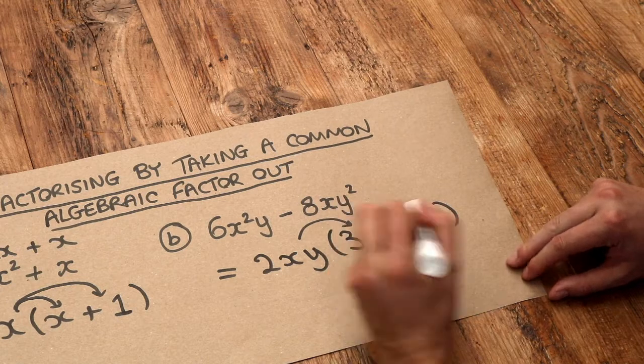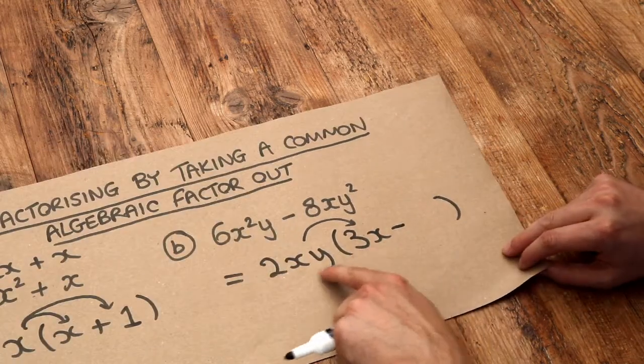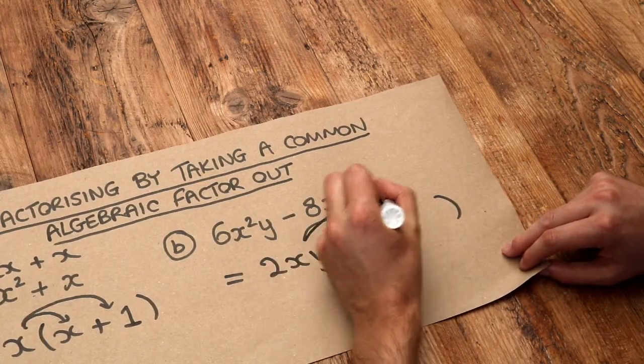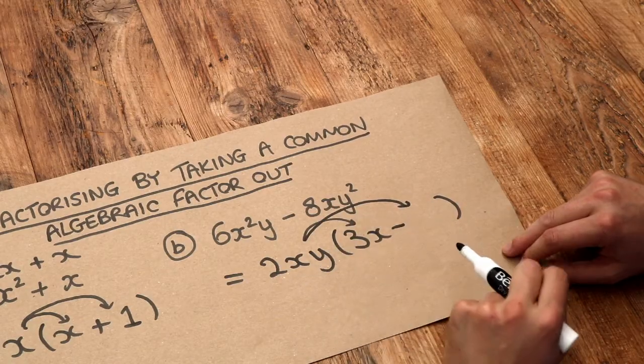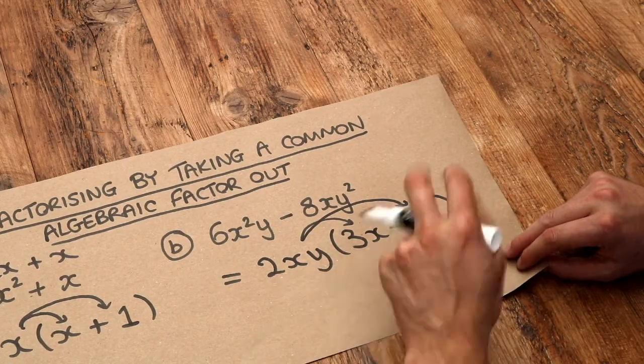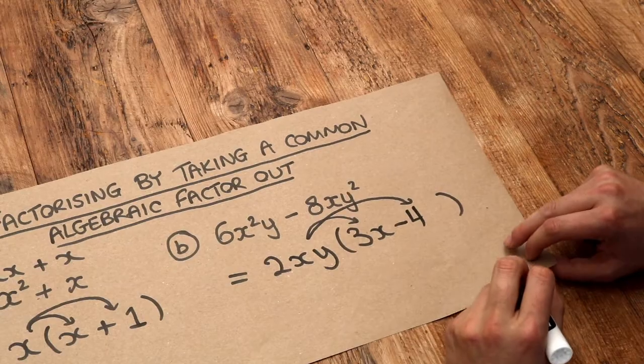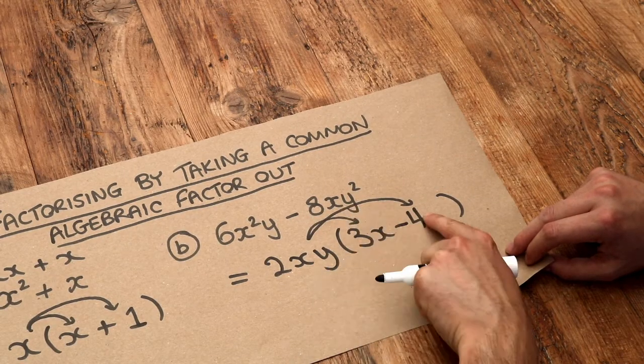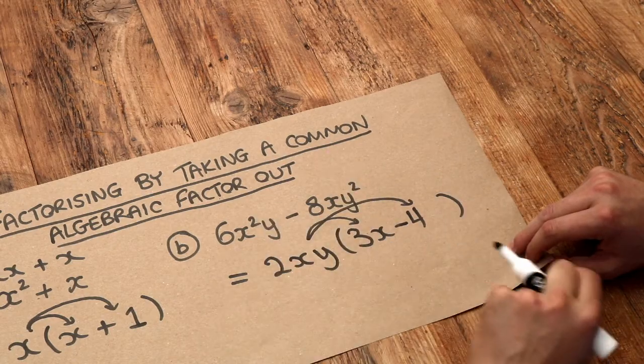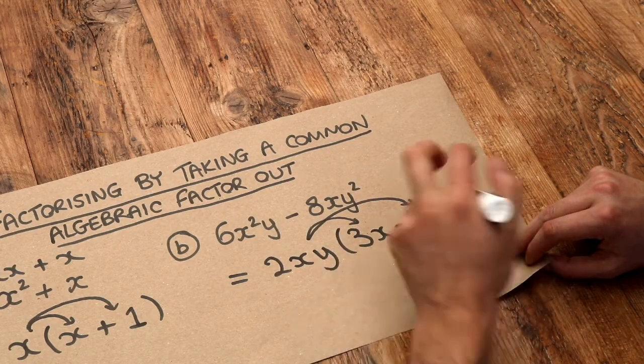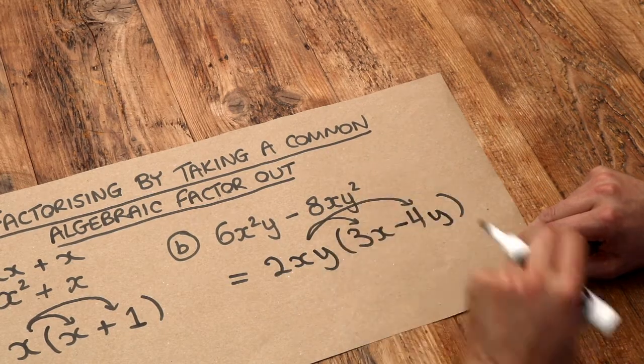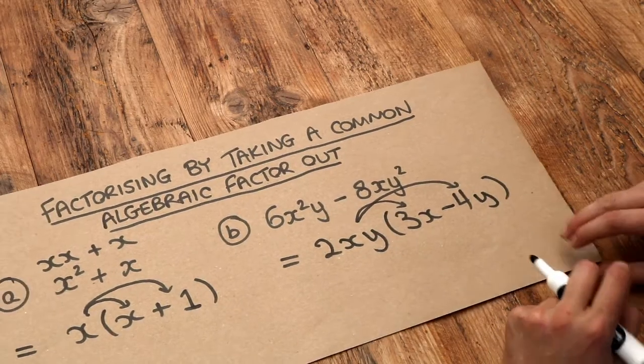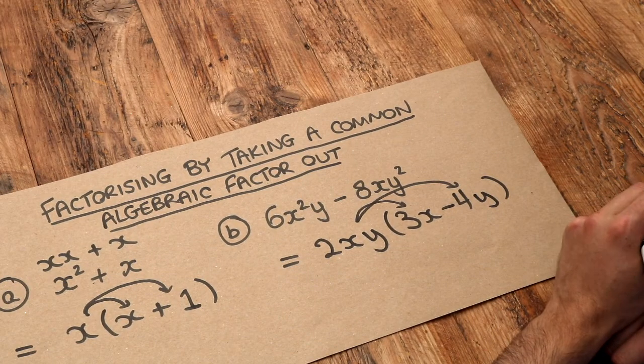Then we've got this minus in the middle and then let's consider what we need to multiply 2xy by to get to 8xy². Well 2 times 4 gives you the 8. Now we've already got a single x and there's only a single x there so we don't need to multiply by any additional x's. And then y we're going to need to times by y to get that y² there. And that is the complete and final factorisation.